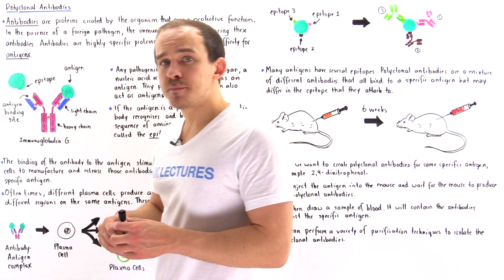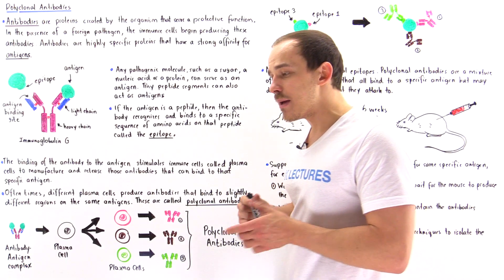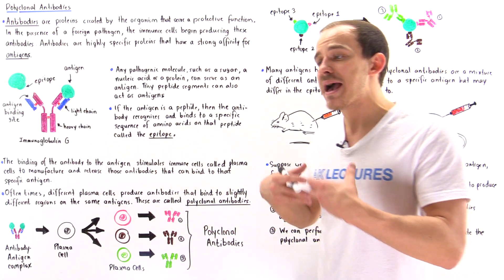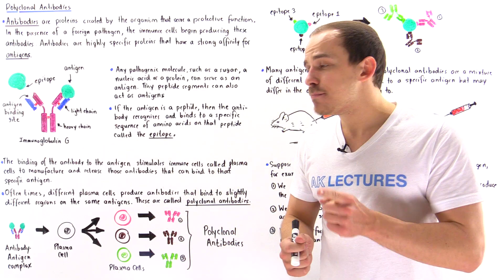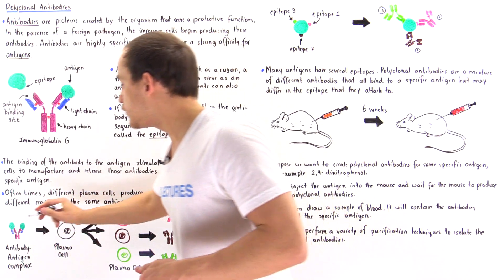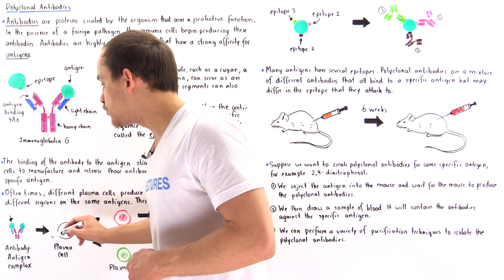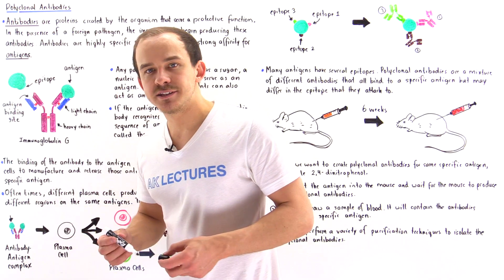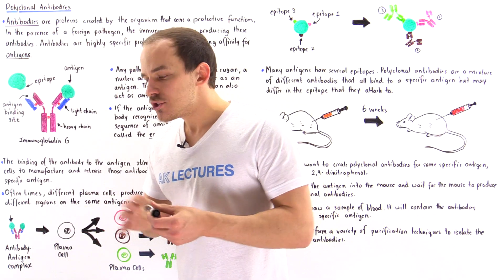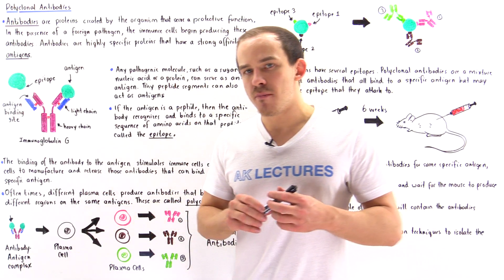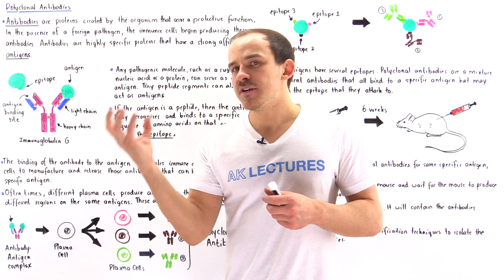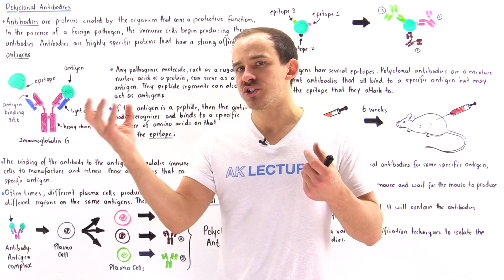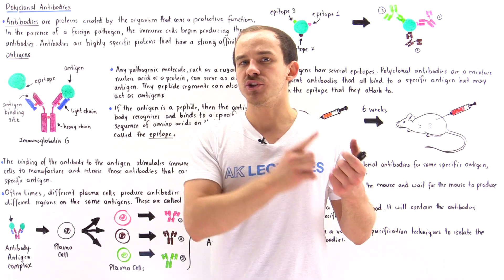Once this binding process takes place, it elicits a series of different responses by our immune system. One way that our immune system responds is by using a special type of immune cell known as a plasma cell to basically manufacture and produce antibodies that bind to that specific antigen. The plasma cells will produce more antibodies that will bind to this specific antigen. The thing about plasma cells is any individual plasma cell will only produce a single type of antibody — there is a one-to-one correlation between the plasma cell and the antibody that it produces.